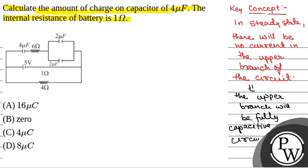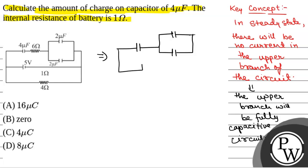Since the upper branch is a fully capacitive circuit, we can neglect the 6 ohm resistor. So that leaves a 4 ohm resistor, two 2 ohm resistors, and a 5 volt battery. There will also be a resistance of 1 ohm — which is the internal resistance of the battery — and a resistance of 4 ohm.